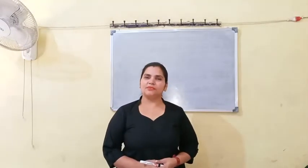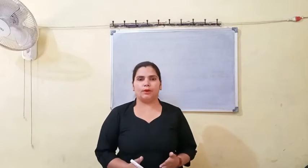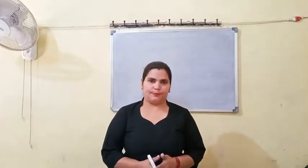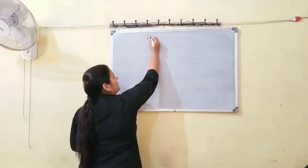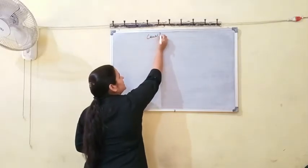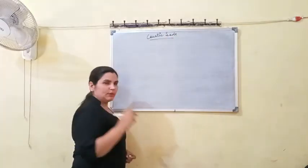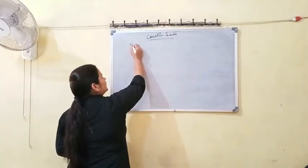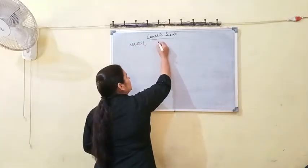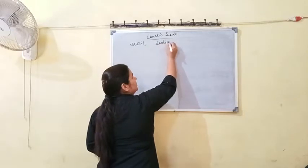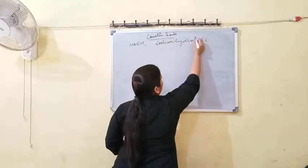Hello students, myself Ranjita Chaudhary and today we will study about a new compound — sodium hydroxide. Sodium hydroxide is commonly known as caustic soda. The chemical formula of caustic soda is NaOH. The chemical name is sodium hydroxide and the common name is caustic soda.